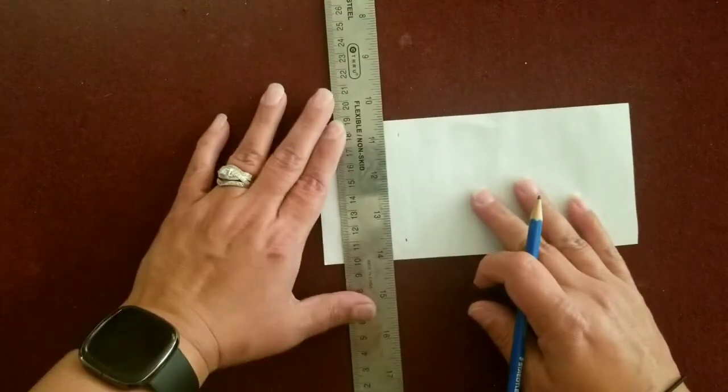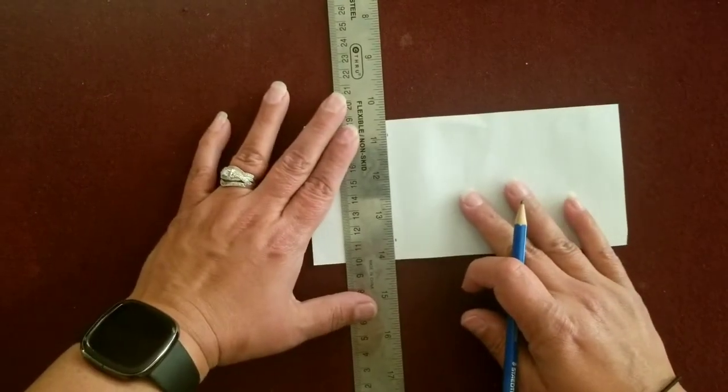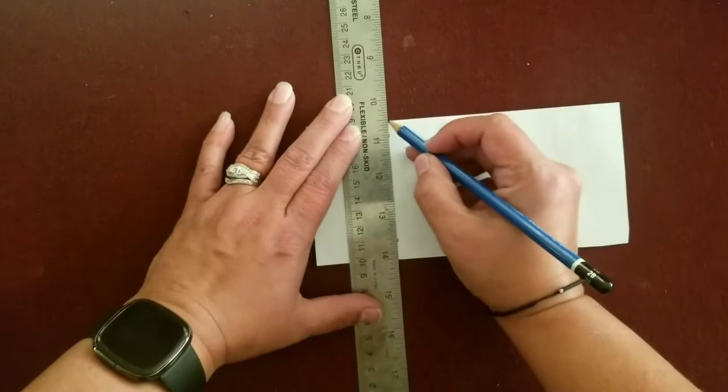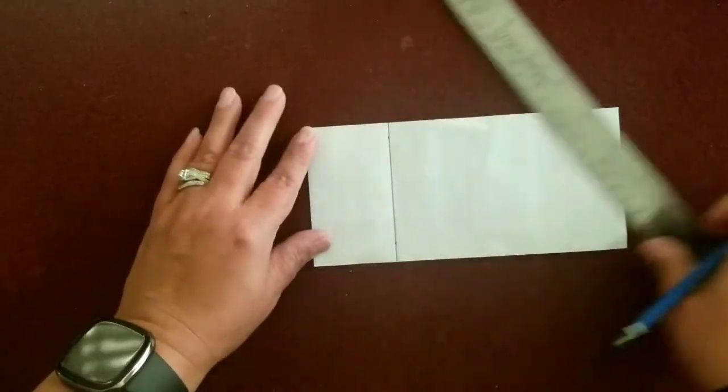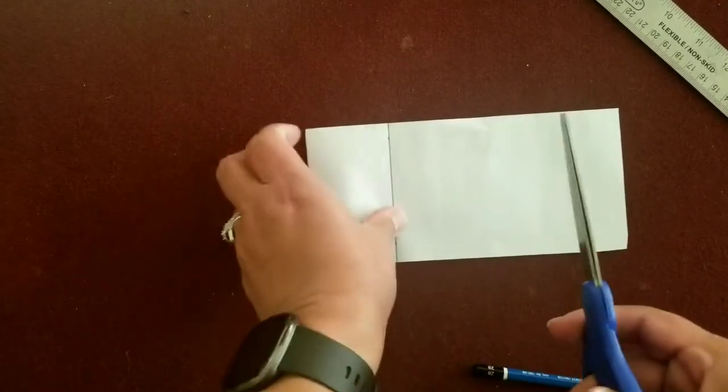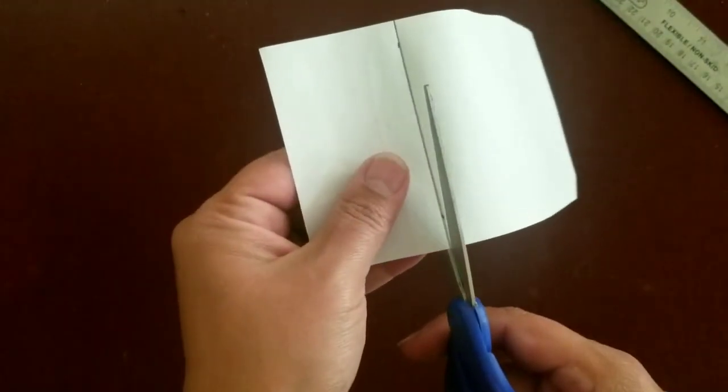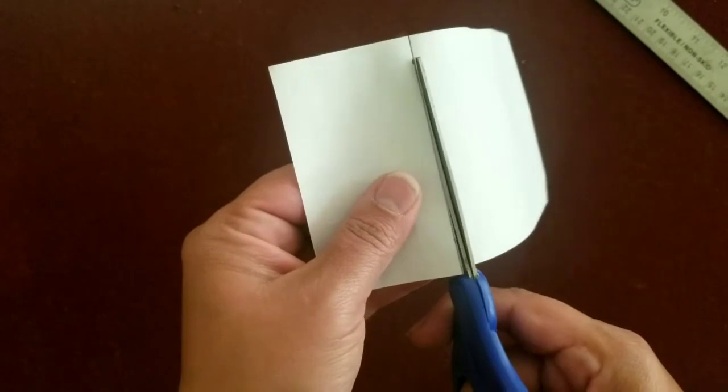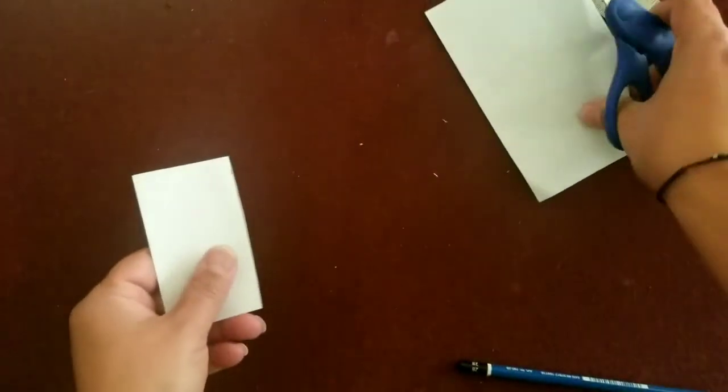And then using your ruler, connect those two dots to create a line. And then we're going to cut off this 2 inch line. So we're going to cut along this line to make that cut so that we have a 2 inch piece of paper.